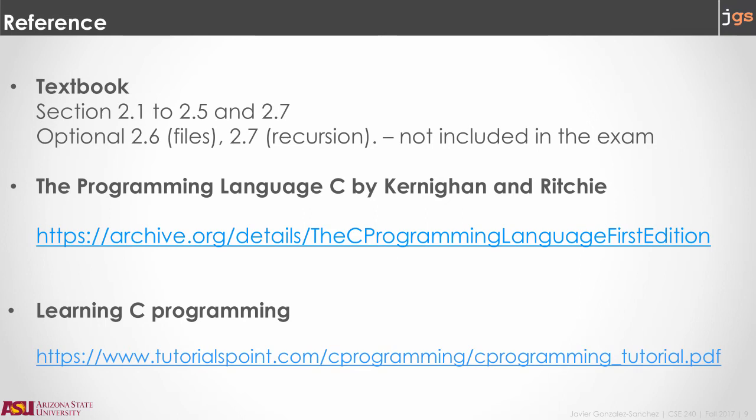I'm going to provide an introduction to the topics mentioned before. However, you need to read the textbook in order to fully understand and practice each of them. Additional references that you can use instead of the textbook or with the textbook are the following. Number one, the best resource to learn C is the book from Kernighan and Ritchie. Dennis Ritchie is the author of the language C. So this is a good book to read. I am showing in the slide a link where you can find the first edition of the book. Additionally, I am sharing with you this tutorial. It's a PDF file and covers most of the topics that we are going to be reviewing this week.